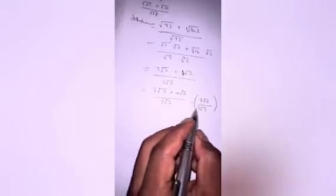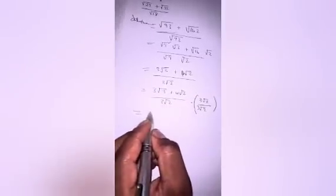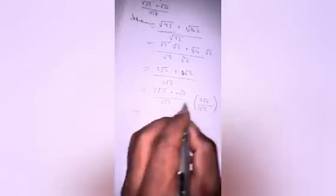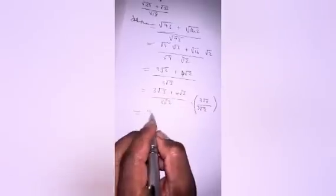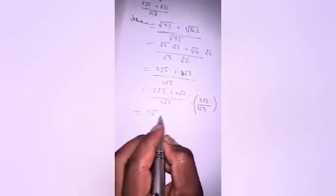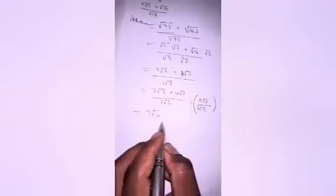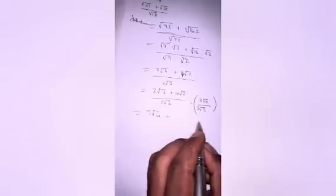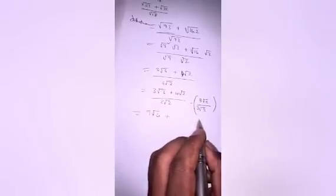I will cancel this, this will be multiplied by this. Now, here we have 3 times 3 is 9 square root of 2 times 6 plus 4 times 3 is 12.